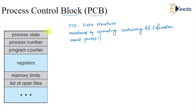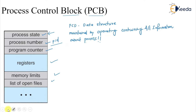There can be several different parameters — values that the PCB can store. A few of them are: process state, process number (PID), program counter value, registers, memory limits, and list of files. These are the values that the process control block maintains.